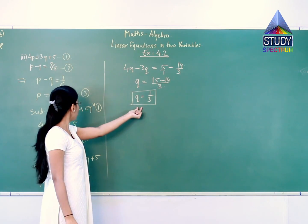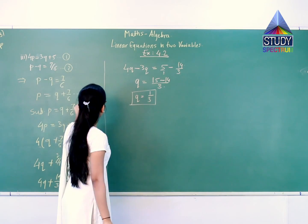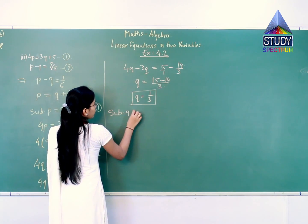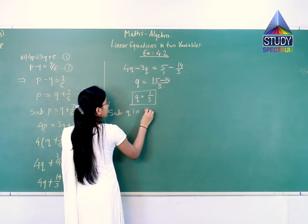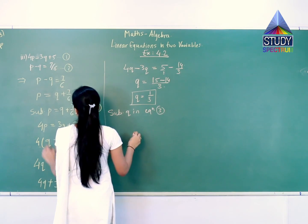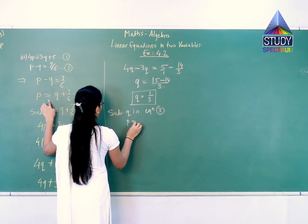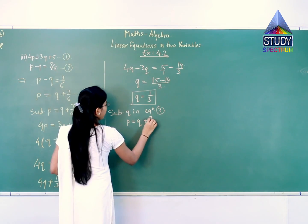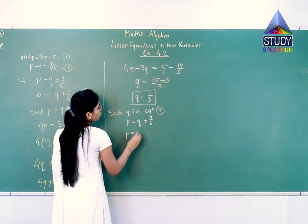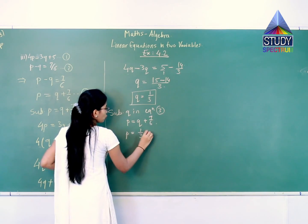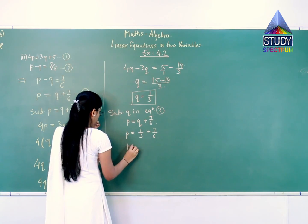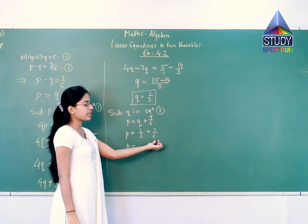We can substitute this value of Q in equation number 3. Substituting Q in equation 3, rewrite the equation: P is equal to Q plus 7 by 6. So P is equal to 1 upon 3 plus 7 upon 6. The LCM will be 6.